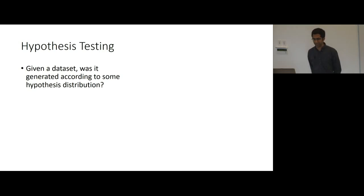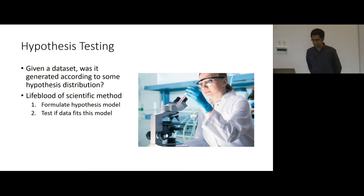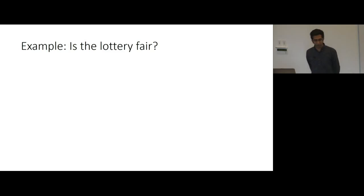Hypothesis testing or distribution testing is the fundamental scientific question asking: given a dataset, was it generated according to some hypothesis distribution? This is the lifeblood of the scientific method. You learned this back in middle school science - the scientific method essentially boils down to two steps. You come up with some hypothesis about what you expect the data to follow, and then you test whether the data actually follows this model by running some sort of experiment.